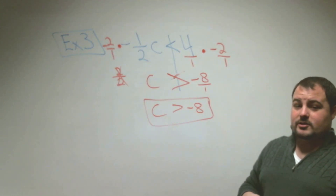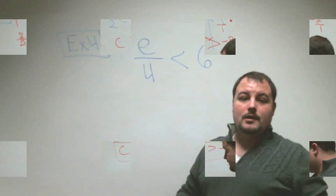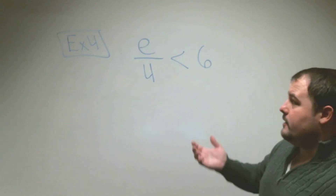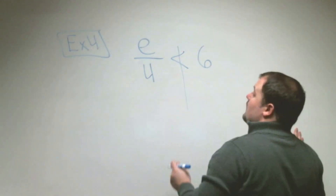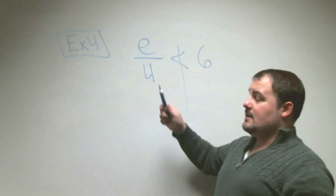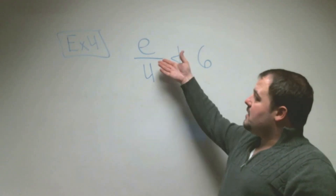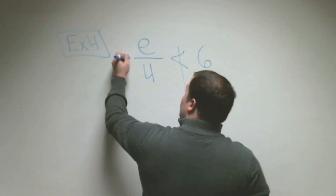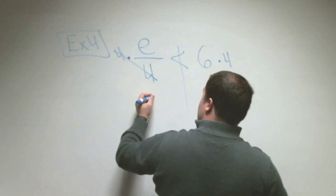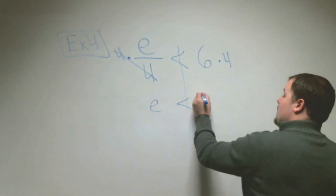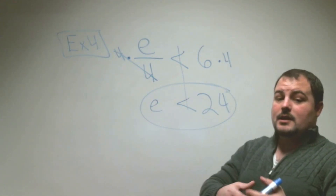Let's look at some division problems. In example four, e divided by 4 is less than 6. Our job is to get e by itself. We draw a line through the inequality sign. Since e is being divided by 4, we multiply both sides by 4 — the opposite operation. The 4s cancel out, and we get e is less than 6 times 4, which is 24.